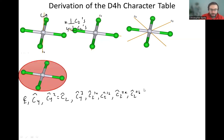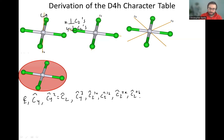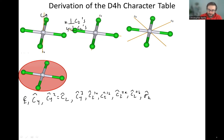Beyond that, we also have a horizontal mirror plane. This mirror plane is called a horizontal mirror plane, sigma H, because it goes through the plane of the molecule and is perpendicular to the principal rotation axis — the C4. That's the definition of a horizontal mirror plane, and we have one of those.